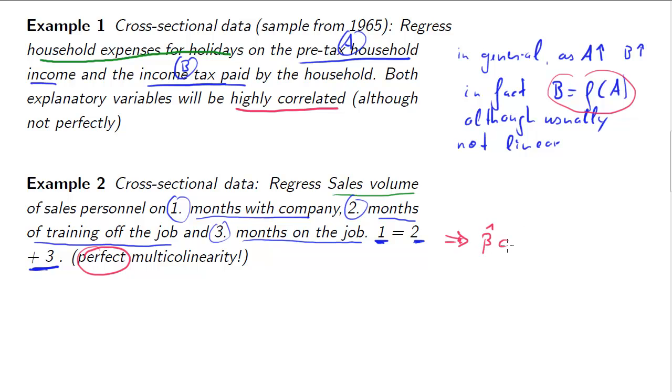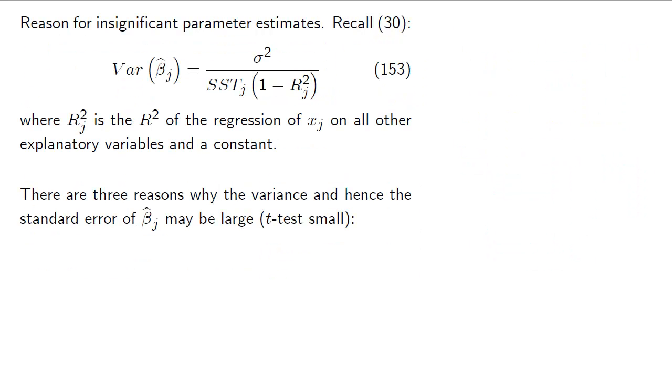So what that leads to is that actually beta, as we argued before, cannot be calculated. That's a real serious problem. This is a breach of assumption. Up here, we just had highly correlated variables, so beta can still be calculated. We just have the problem of inflated standard errors.